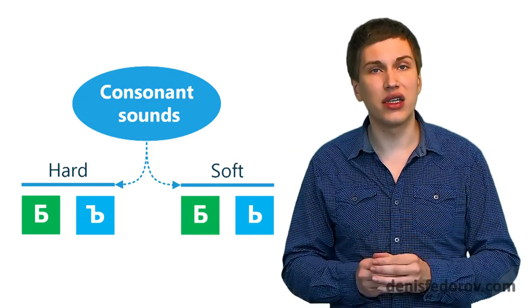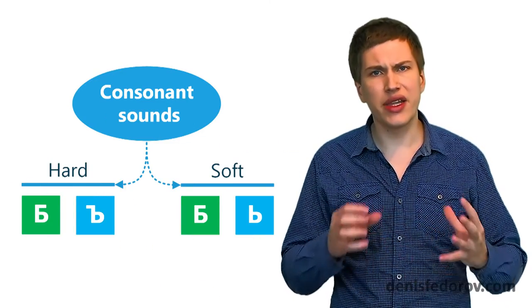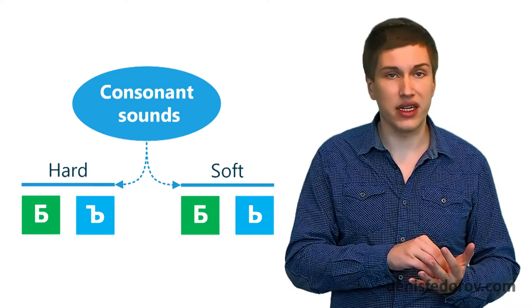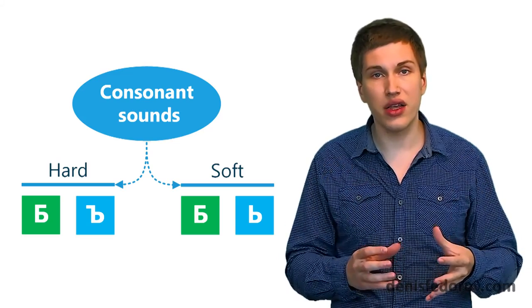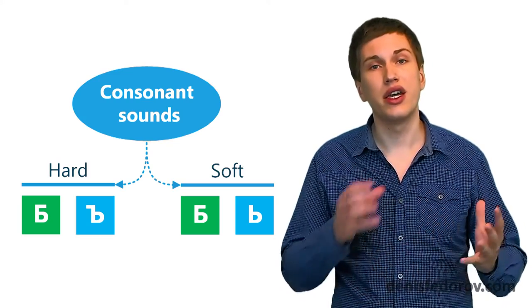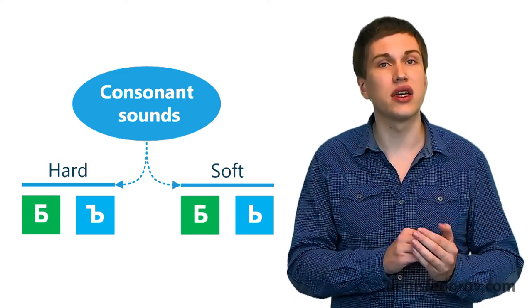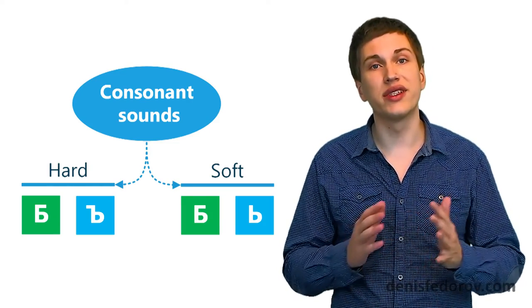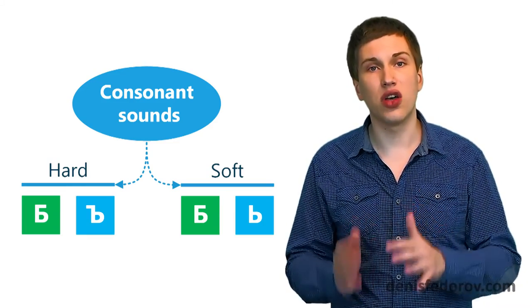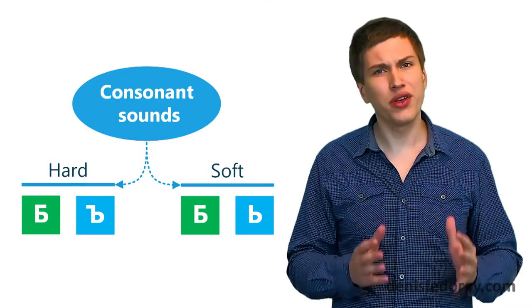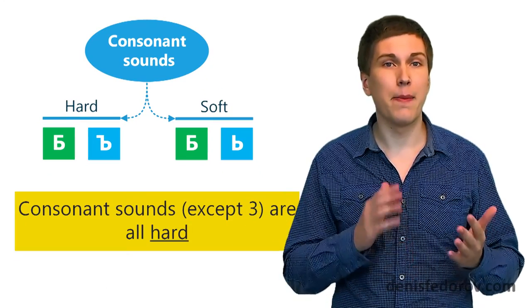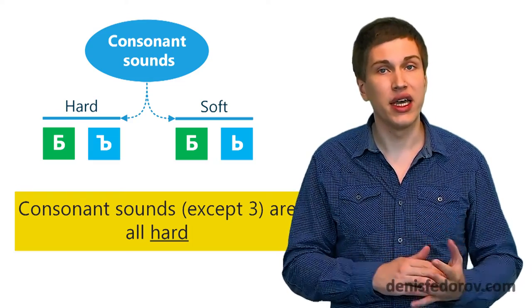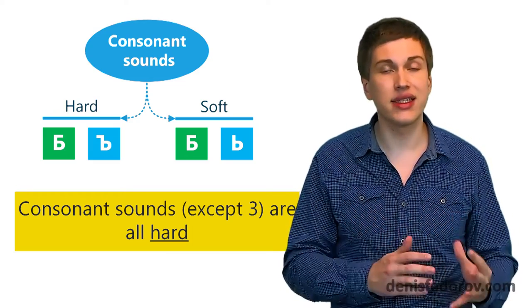Because sounds can be hard and soft. Imagine you place a hard sign after a consonant. And then you put a soft sign after it. Well, those who have learned the Russian alphabet know that in each situation consonants sound differently. With a hard sign after, a consonant will sound hard. With a soft sign, soft. But here is the important thing. We read most consonants by default like it has a hard sign after it. So by default, consonants are hard.